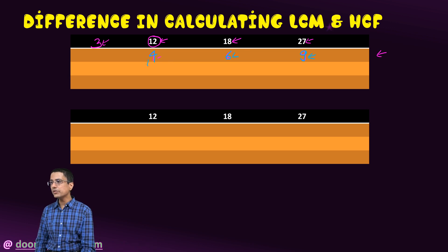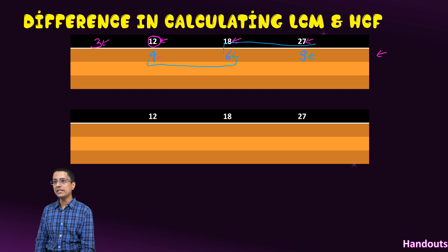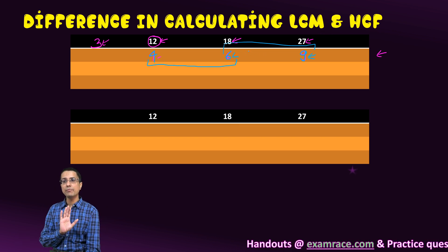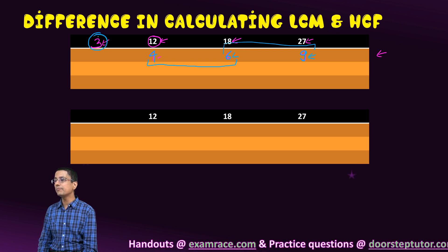There is no common factor. Two is a common factor of only these two. Three is a common factor of only these two, only 6 and 9. So we will not use those numbers at all and we will say that the HCF is simply 3.